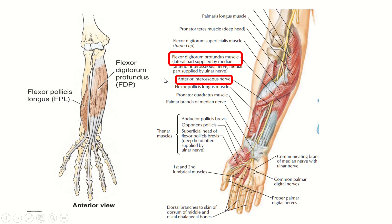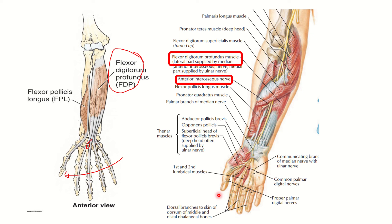Let's look at the flexor digitorum profundus. It is one of the long muscles of the forearm because it inserts in the hand and then converts into four tendons — one, two, three, four tendons. It is a large muscle of the forearm and hand. Just lateral to it is the flexor pollicis longus. In the second picture, the flexor digitorum profundus is the deep muscle, with a lateral side and a medial side visible.